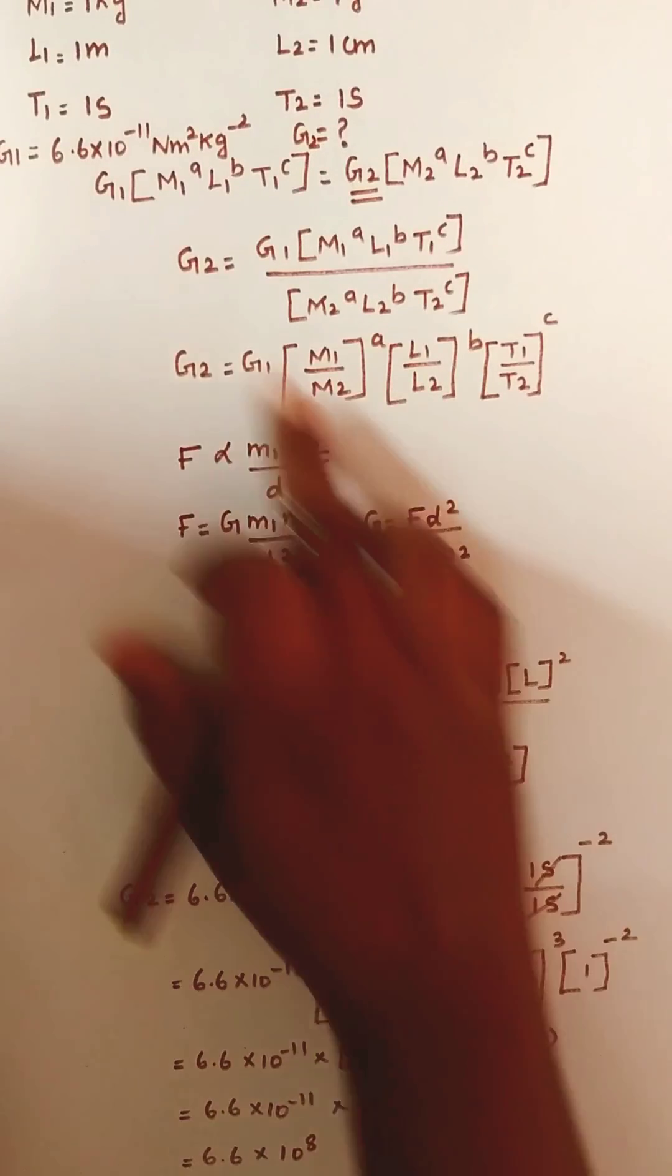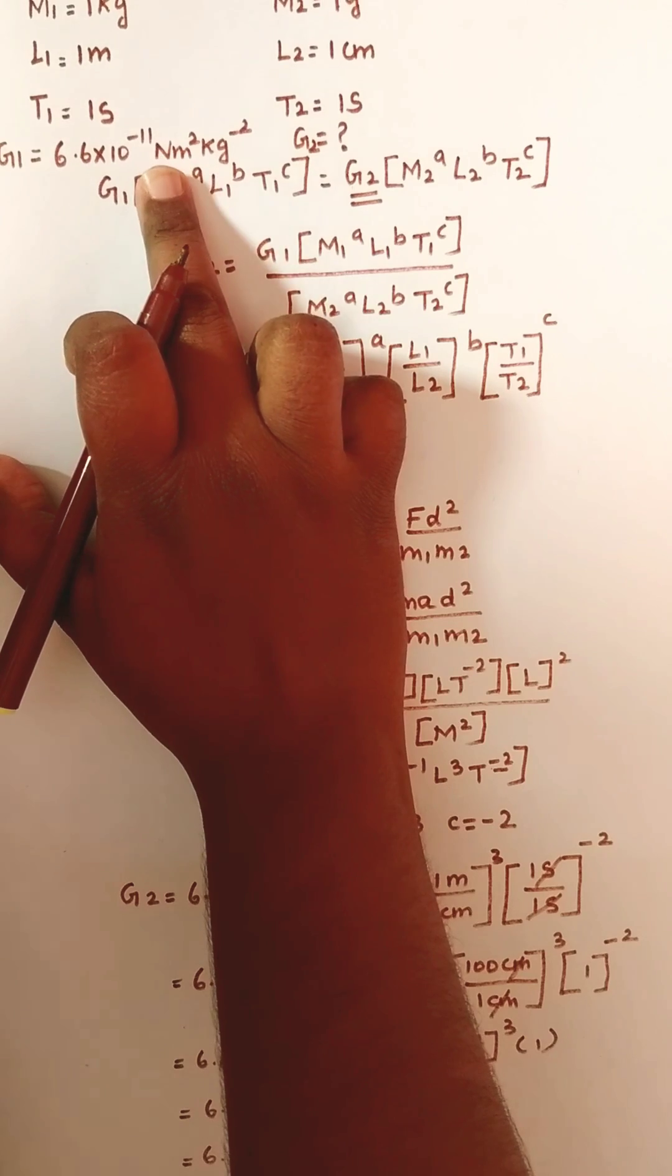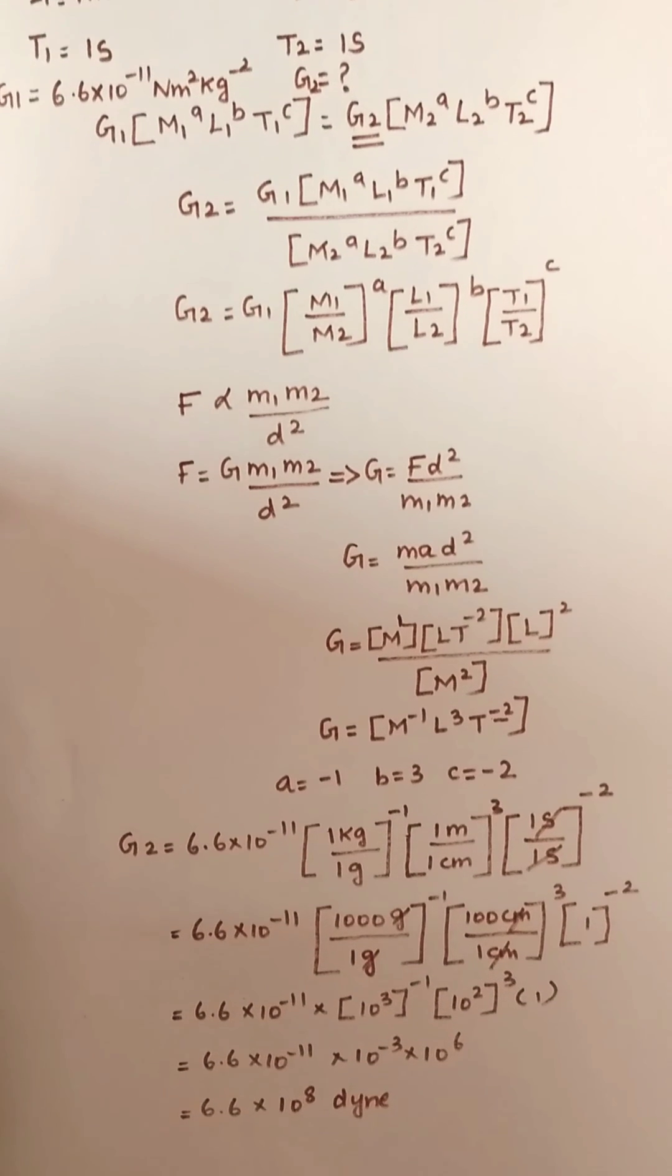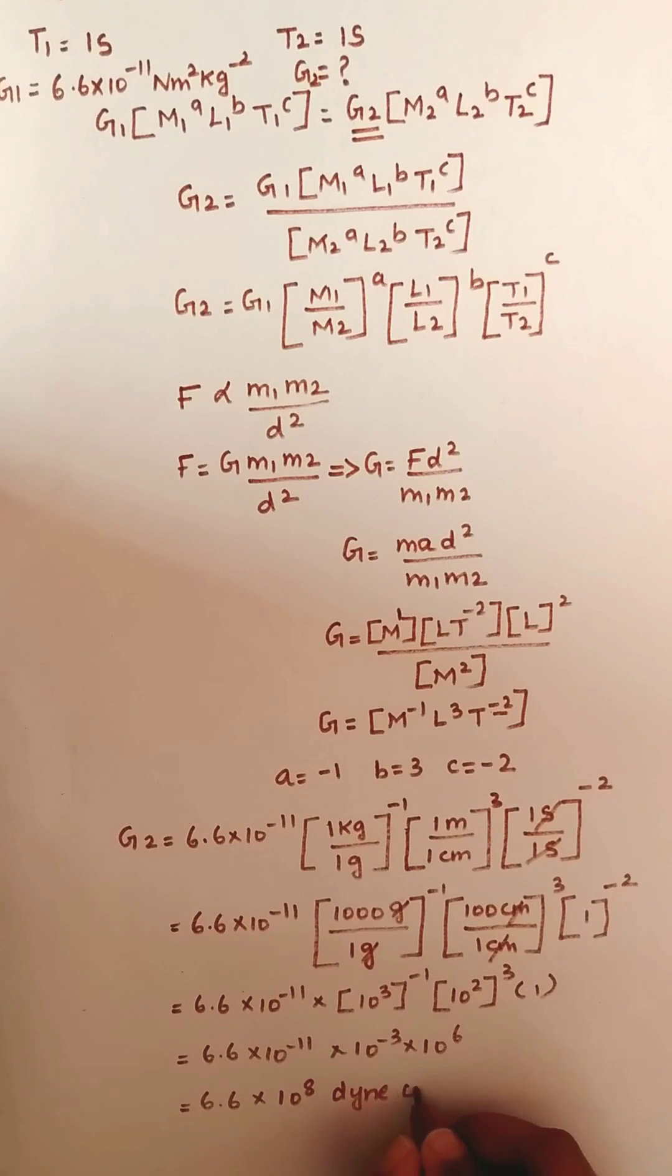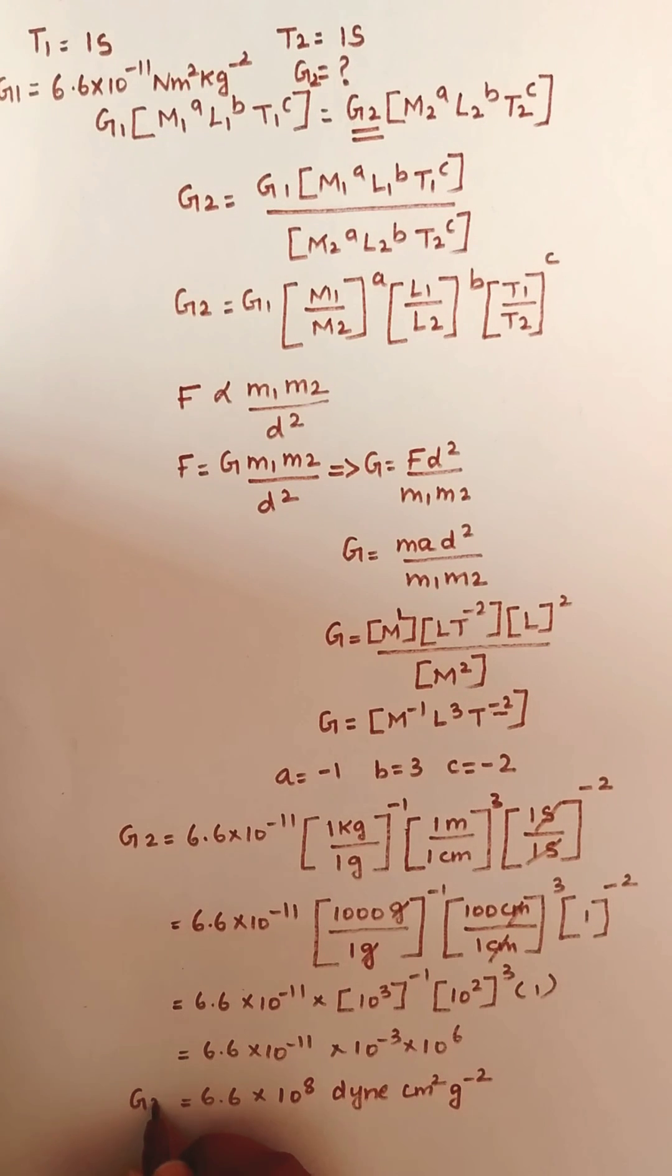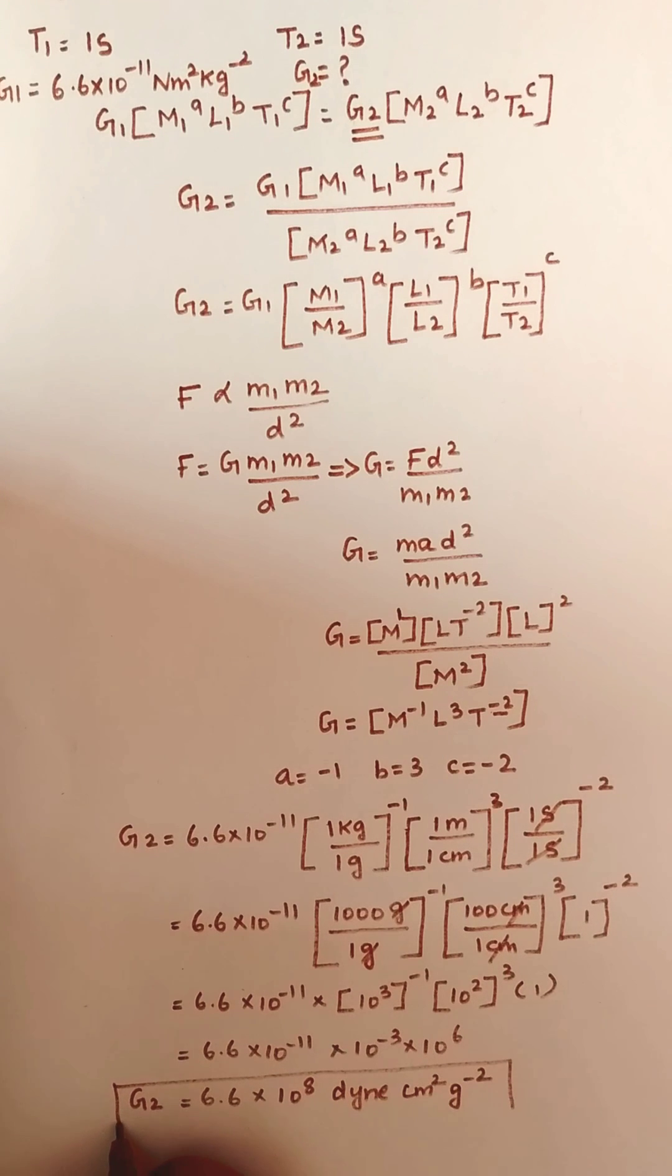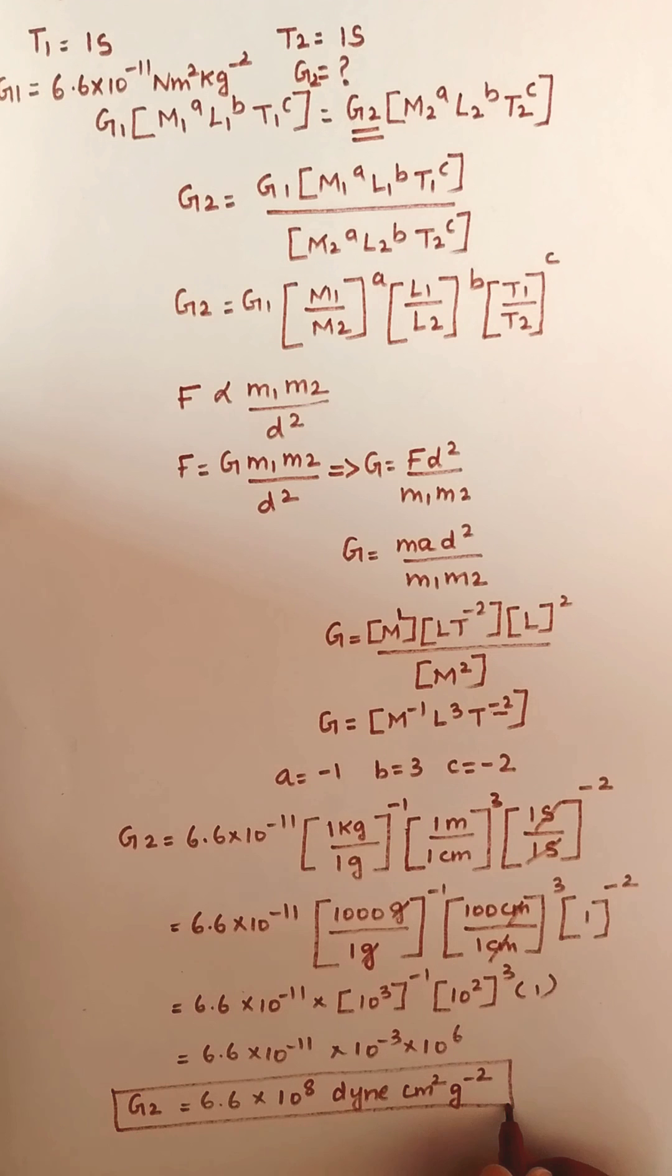They have given the unit as Newton, which in CGS system is dyne. Meter in CGS system is centimeter. Kilogram in CGS system is gram. So this is the final value: 6.6 × 10⁻⁸ dyne·cm²·g⁻². We just converted gravitational constant from SI system to CGS system.